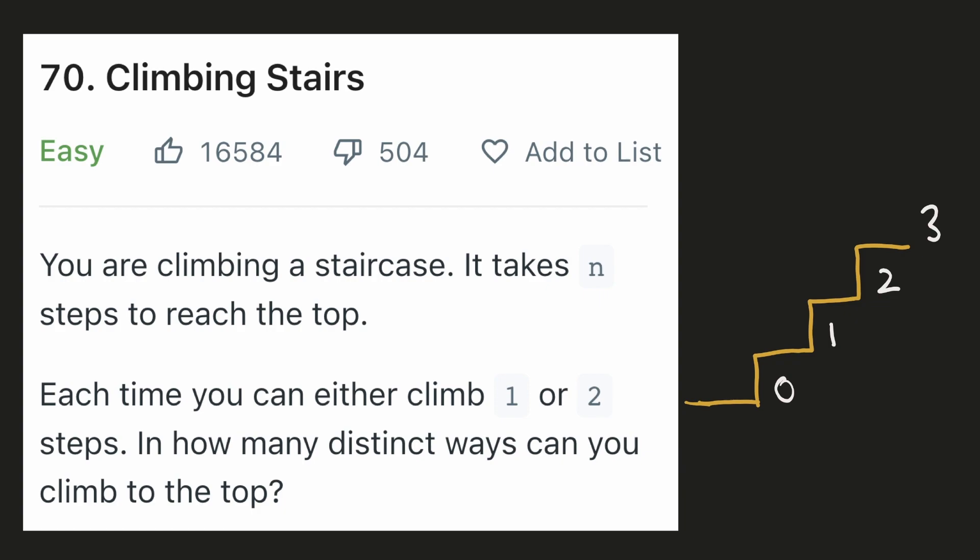In this example, we have three steps and one way to reach the top is to take three single steps at a time. Another way would be to take first a single step and then a double step. We could also start by first taking a double step and after that we can take a single step. So in total, we have these three ways of reaching the top.